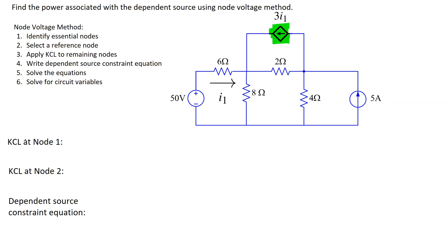In this given circuit, we have two ideal independent sources: an independent voltage source and an independent current source. This component here, which is highlighted in green, is the dependent source. We can see that the dependent source has an arrow inside its symbol, which signifies that this is a dependent current source. Its magnitude has this current I1, so this means that this dependent source is a current controlled current source.